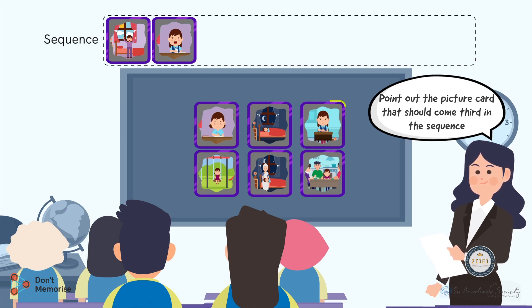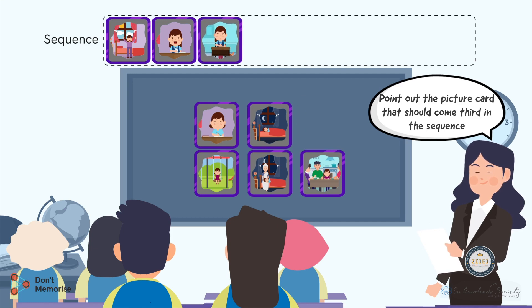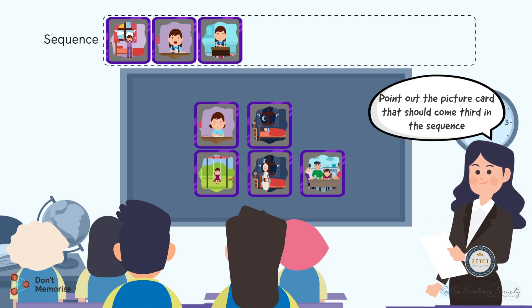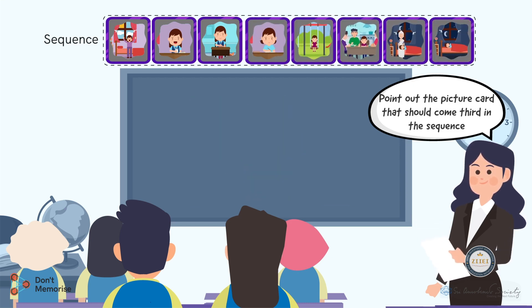Align the picture card third in the sequence. In the same way, continue asking questions to the students and align the pictures in the sequence. After the sequence is completed, it will look like this.